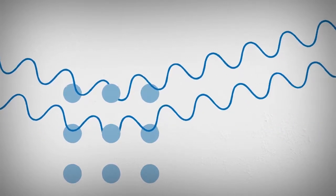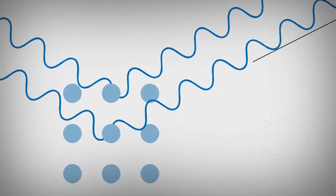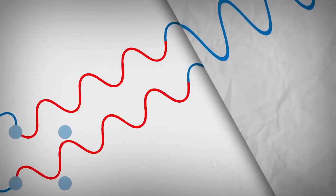Strong amplification of the emitted signal occurs at very specific angles, where the scattered waves constructively interfere. This effect is called diffraction.